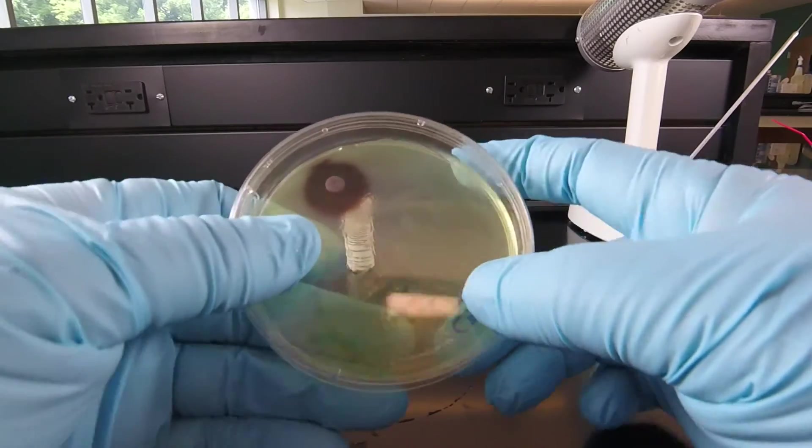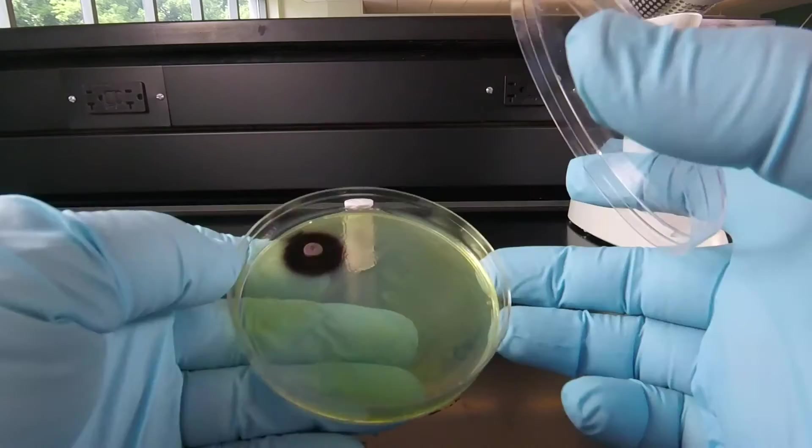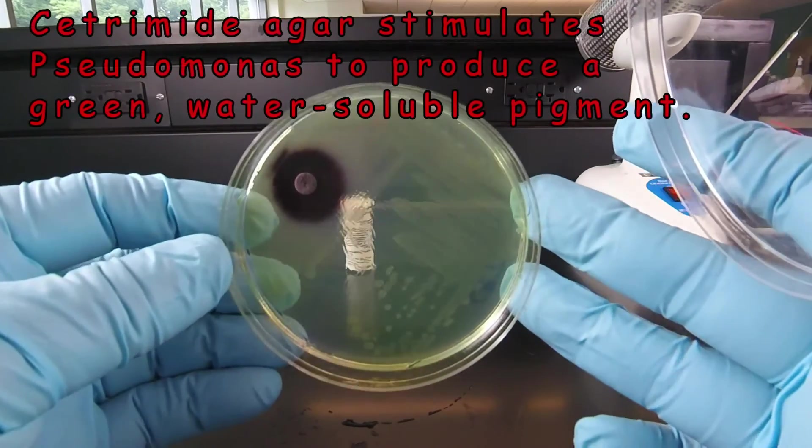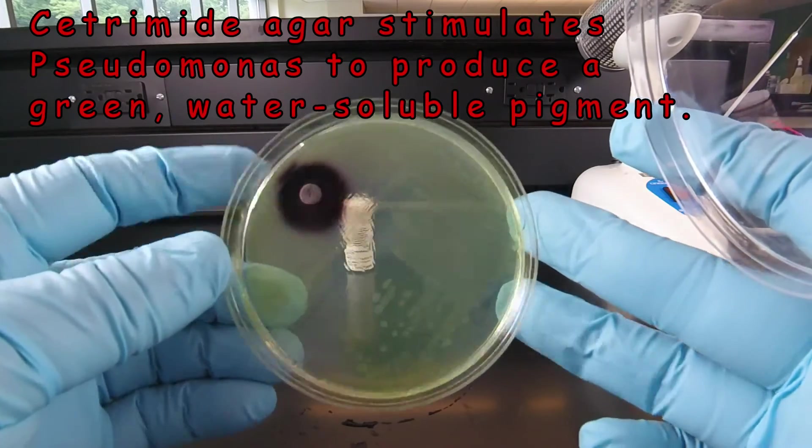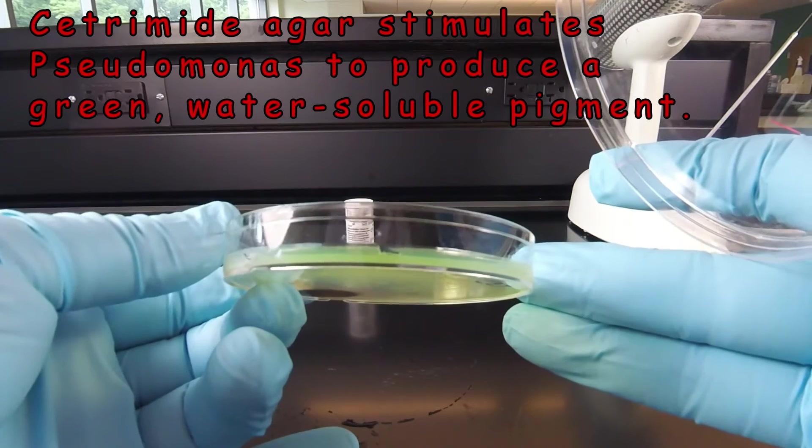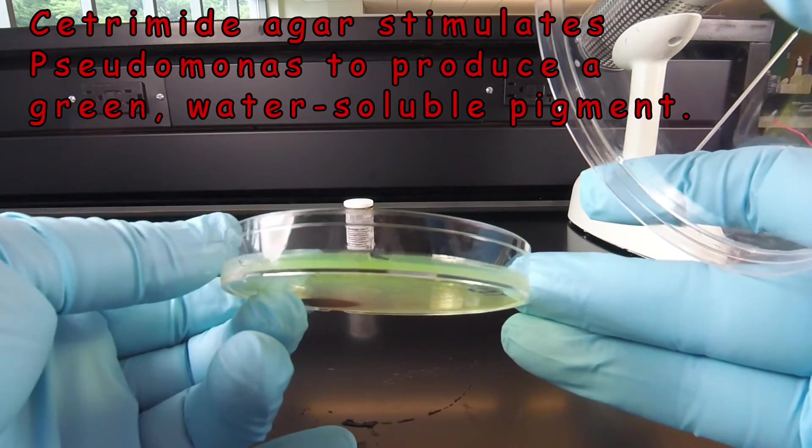So we can see that the bacterium has grown on the agar, and we see the agar has turned kind of a light green color. If we look at the edge of the plate here, we can see that the pigment has diffused down into the agar, turning the agar green.